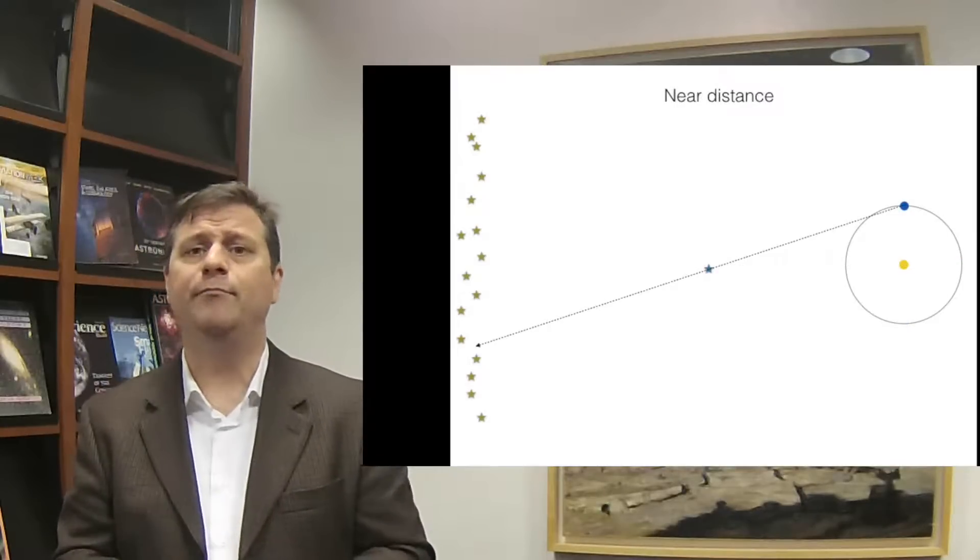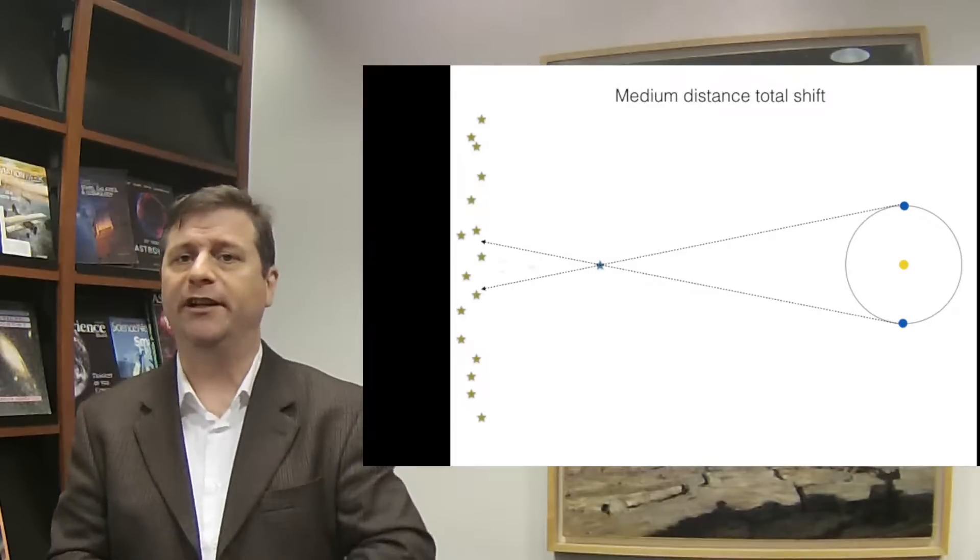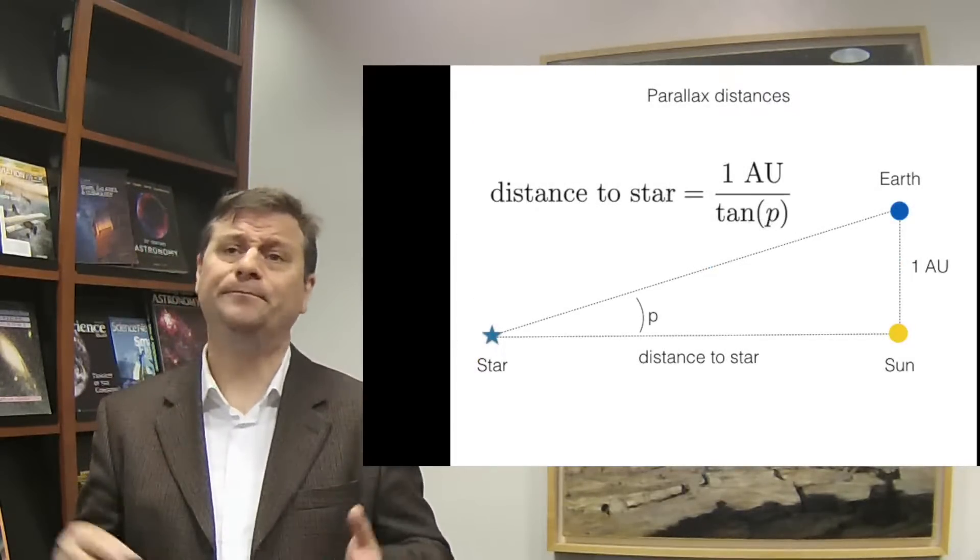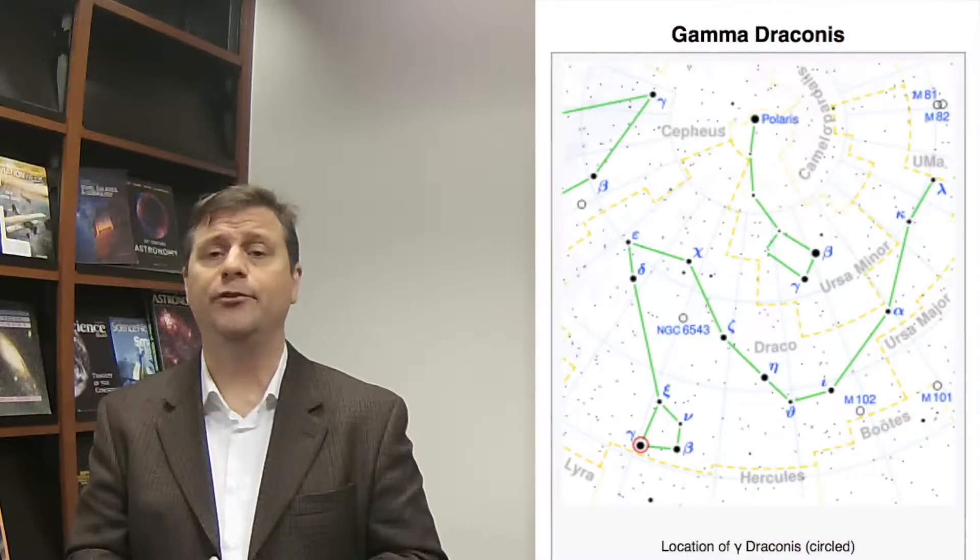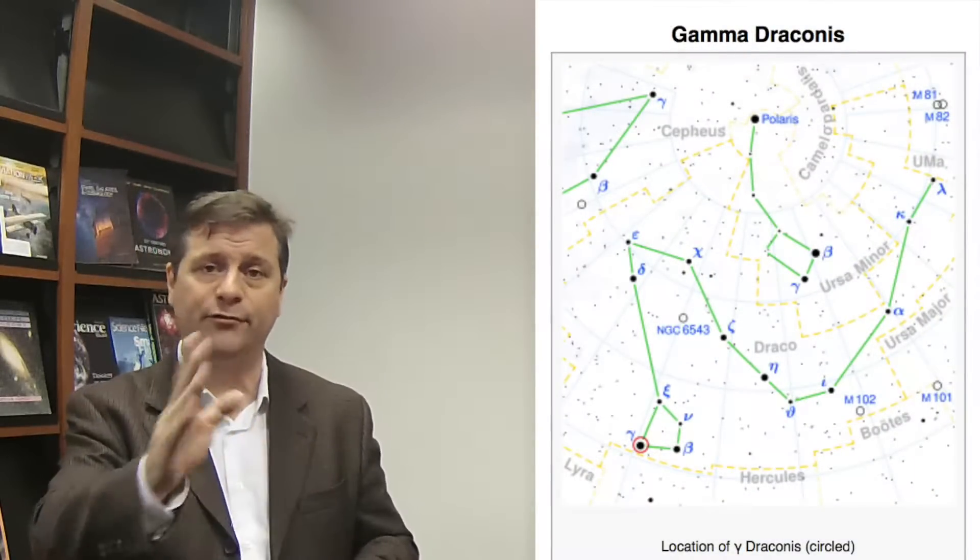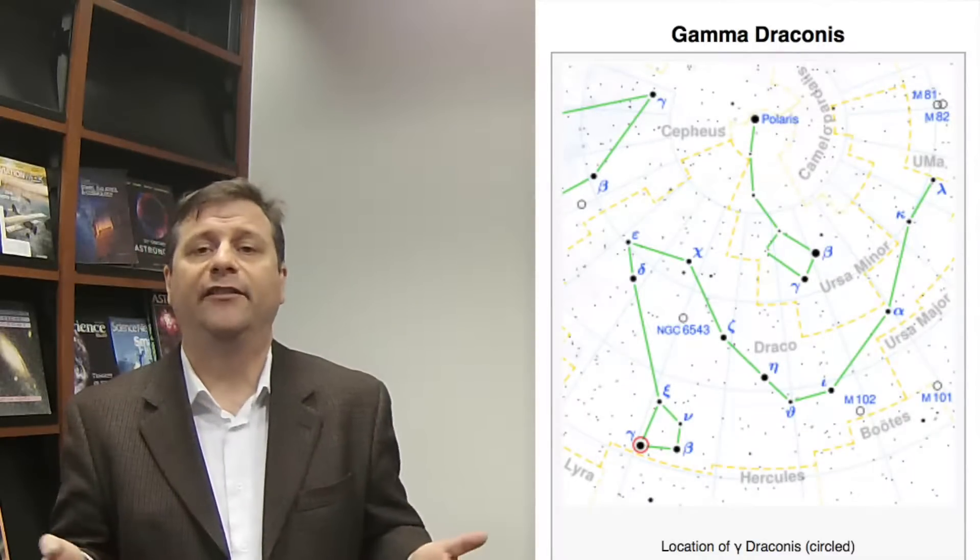Even after Newton published his Principia, the laws of gravity, the laws of motion, the parallax still had not been observed. So it was an area of active research. In 1674, Robert Hooke tried to do so with Gamma Draconis, which is a bright star in the constellation Draco, which is easily measured in London because it passes straight overhead. He tried to see the parallax of that star, and he wasn't entirely successful. But he at least paved the way.